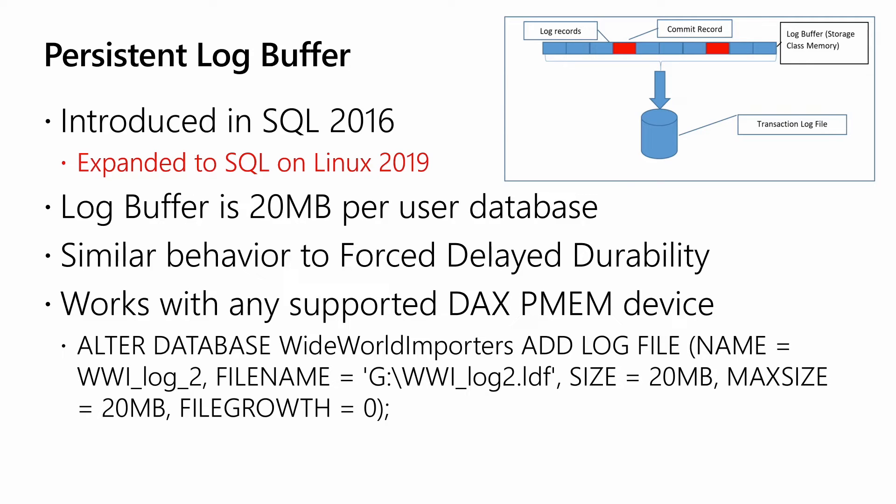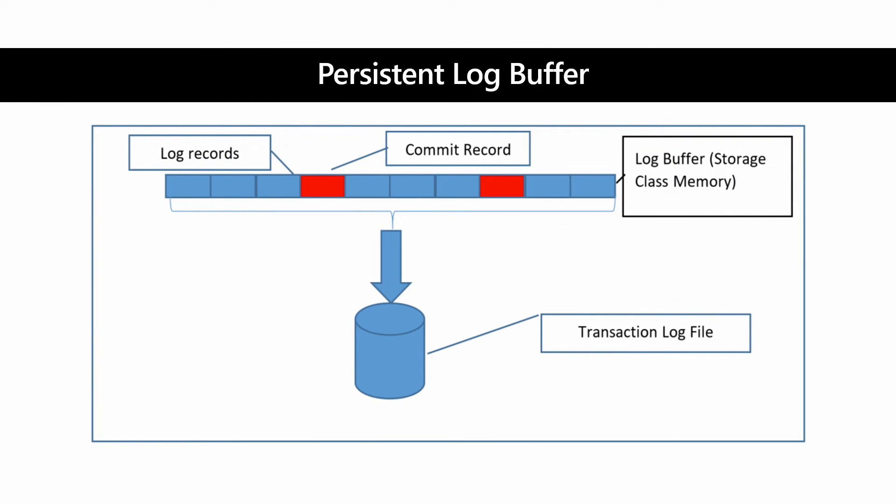It's actually quite simple. A lot of people don't realize you simply add a log file of 20 megabytes on the persistent memory device. SQL Server will recognize this device and treat it as the log buffer — and it's really that simple. Our log buffer sits on storage class memory, which is PMEM, and our log records are there so we don't have to wait for them to be flushed to the main transaction log file.